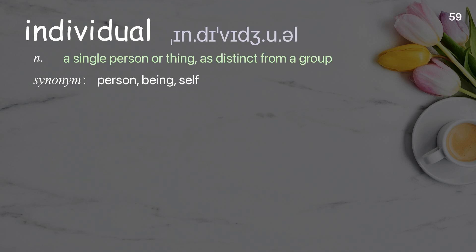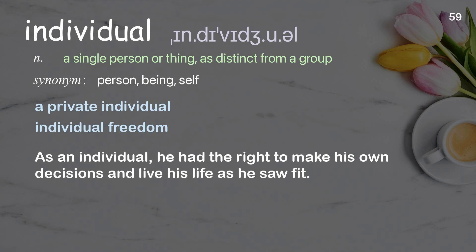Individual: A single person or thing, as distinct from a group. Examples: A private individual. Individual freedom. As an individual, he had the right to make his own decisions and live his life as he saw fit.